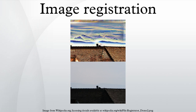Image registration algorithms can also be classified according to the transformation models they use to relate the target image space to the reference image space. The first broad category of transformation models includes linear transformations, which include relative rotation, scaling, translation, and other affine transforms. Linear transformations are global in nature; thus, they cannot model local geometric differences between images.